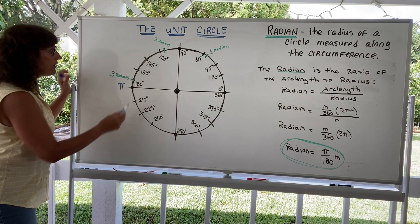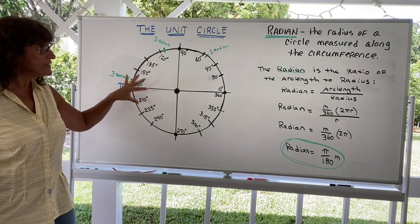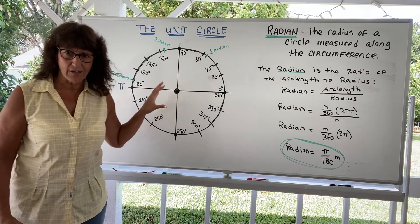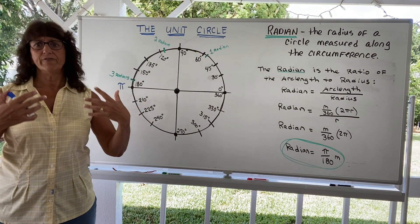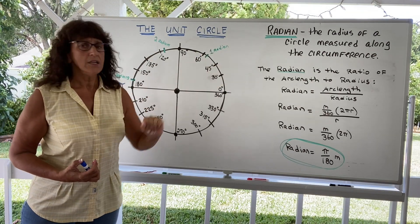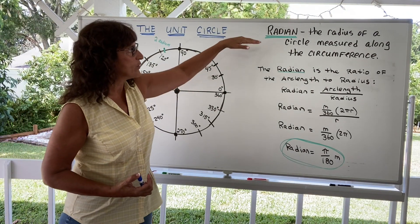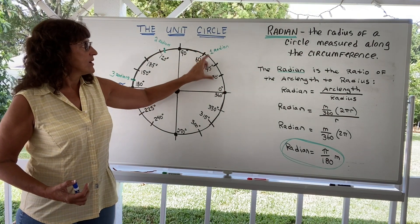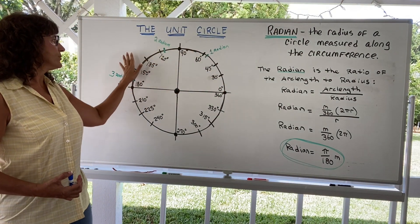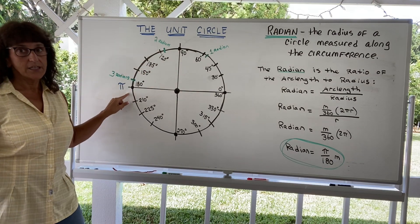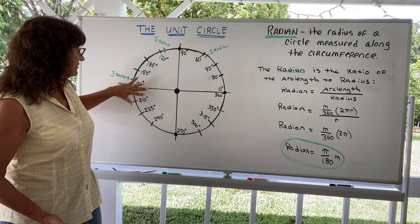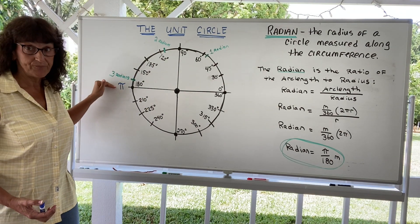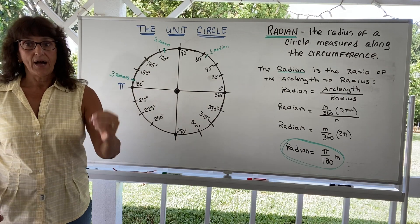And that comes straight from the definition: the radian is the radius of the circle measured along the circumference. You take the radius measured along the circumference — one radian, two radians, three radians — and then in half a circle, 180 degrees, it's a little more than three, specifically pi radians. So we call 180 degrees pi radians, and when you're learning to convert degrees and radians, everything comes back to this.